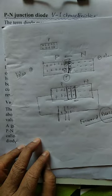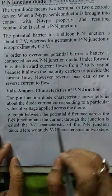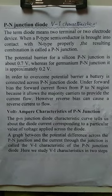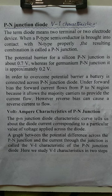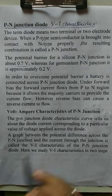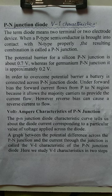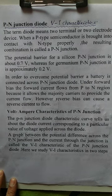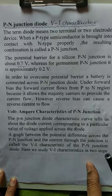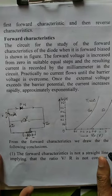Under forward biasing, if we change the voltage, the corresponding current will be noted. Our purpose is to change the voltage and note the corresponding currents — that is called VI characteristics: V for voltage, I for current, in a p-n junction diode. This is called forward characteristics.